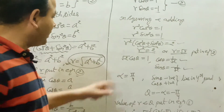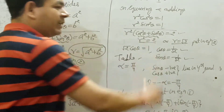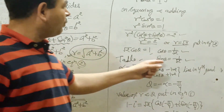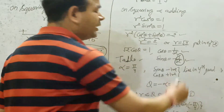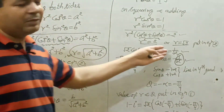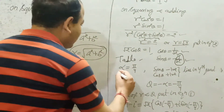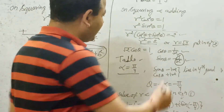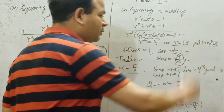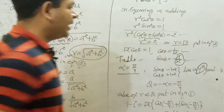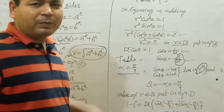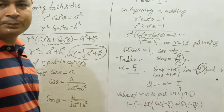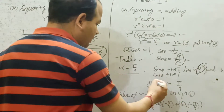Now find alpha from the table using numerical values without considering signs. From the table, sin or cos of 1/√2 corresponds to 45 degrees, which is pi by 4 in radians. So alpha equals pi by 4. Now sin theta is negative and cos theta is positive, which lies in the fourth quadrant. In the fourth quadrant, theta equals minus alpha. So theta equals minus pi by 4.